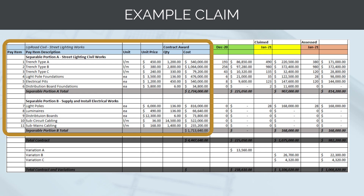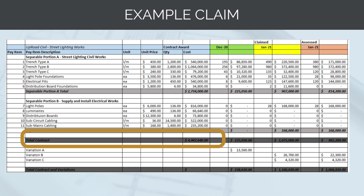Under each separable portion there are schedule of rate payment items. Under Separable Portion A, there are payment items for trench types A, B and C, light pole foundations, electrical pits and distribution board foundations. The quantities are assessed by metres for trenches, and per unit for foundations and pits. The contract unit rate for each lineal metre of trench type A is $450. At tender stage, the total assumed quantities were 1,200 metres of trench type A, 29,800 metres of trench type B, and 330 metres of trench type C. In a schedule of rates contract, these quantities are indicative only — primarily for calculating an indicative total contract value used for insurance and securities. Based on these quantities, the total contract value for Separable Portions A and B is around $4 million.